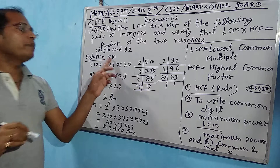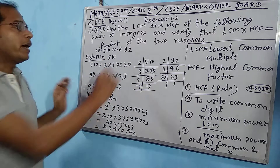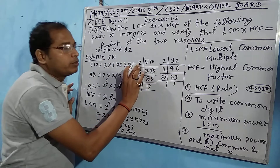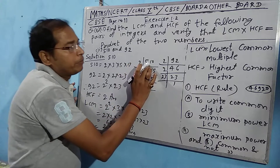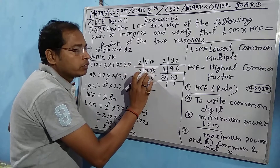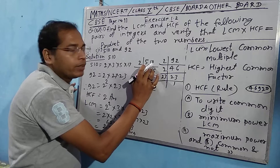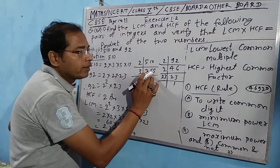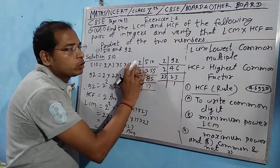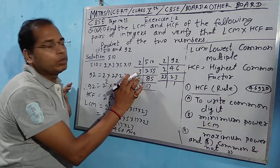The question is: find LCM and HCF of 510 and 92. First, let's do the prime factorization of 510. 510 is divisible by 2, giving 255. Then checking divisibility by 3: the sum of digits 5+1+0 = 6, which is in the table of 3, so 510 is also divisible by 3.